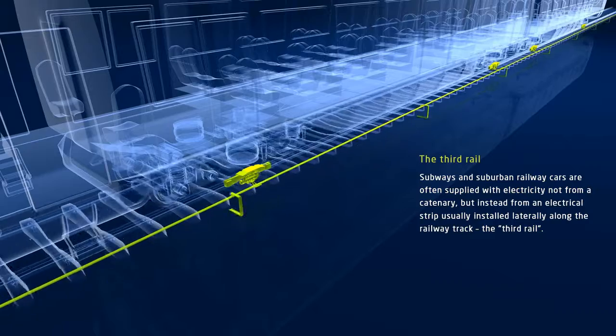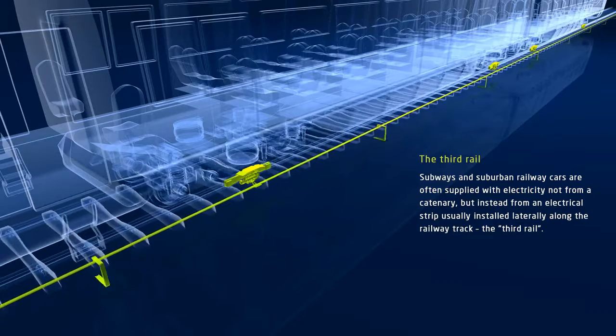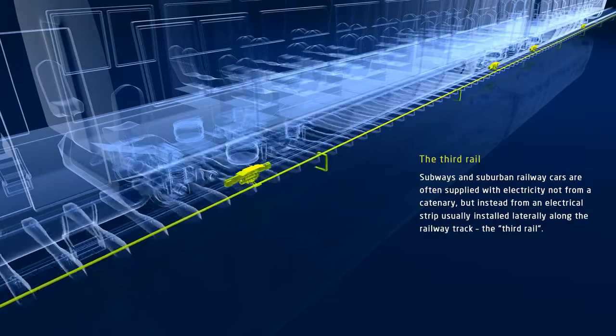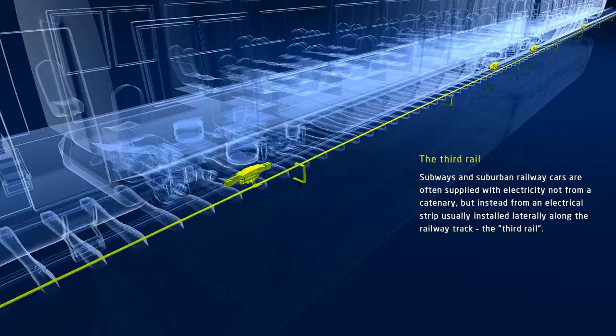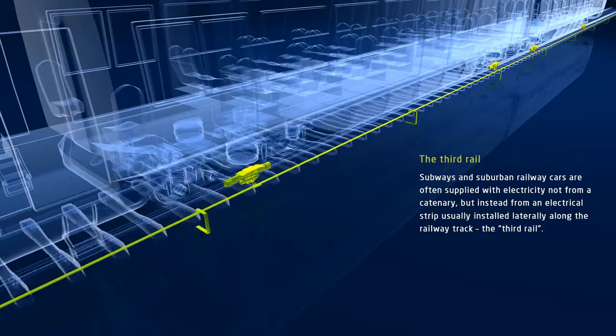Subways and suburban railway cars are often supplied with electricity from a so-called third rail. This electrical strip most often runs along the side of the railway track.